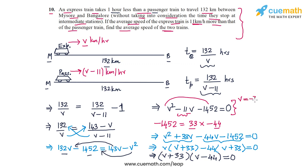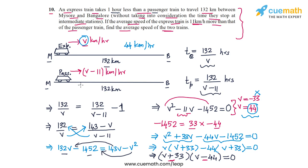The two roots of this quadratic equation are v equals minus 33 and v equals 44. Clearly, the valid root is v equals 44 because speed cannot be negative. So the average speed of the express train is 44 kilometers per hour, and the passenger train's average speed is 11 kilometers per hour lower, which is 33 kilometers per hour.